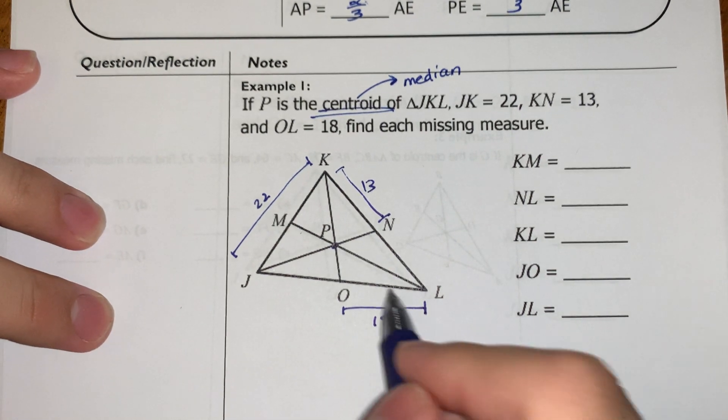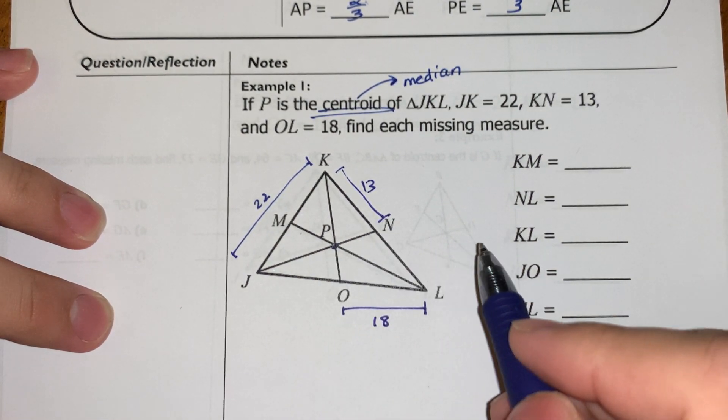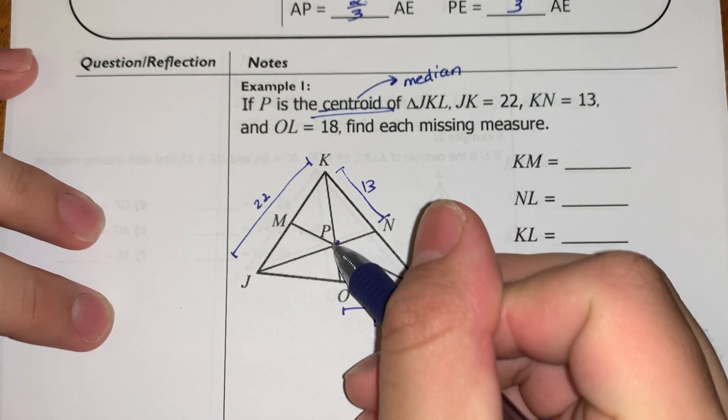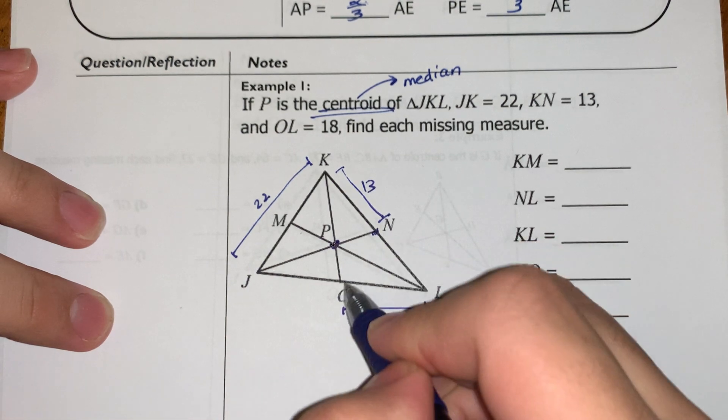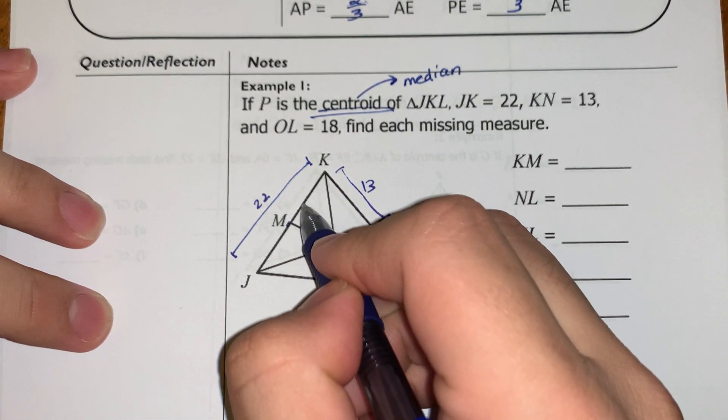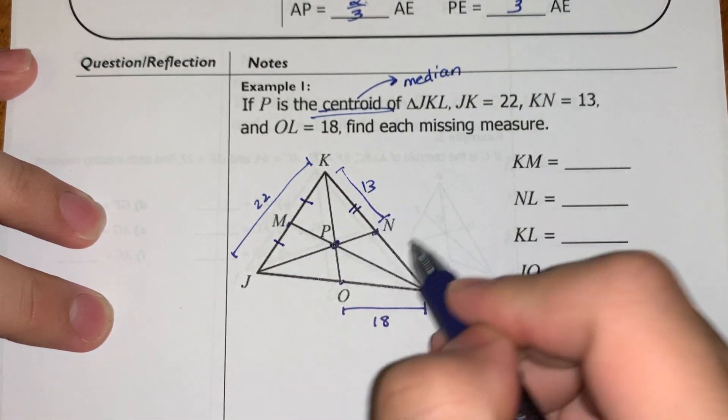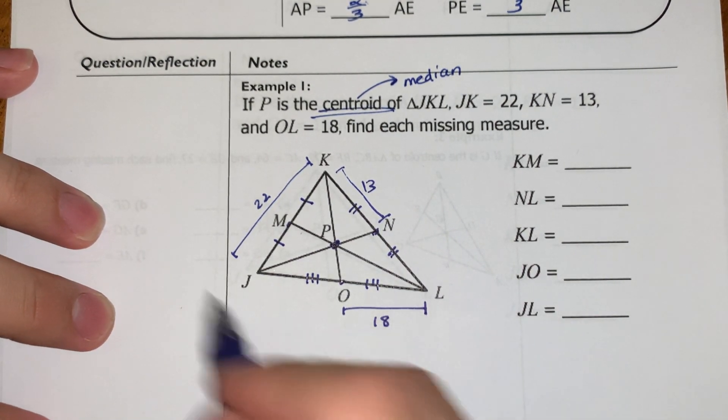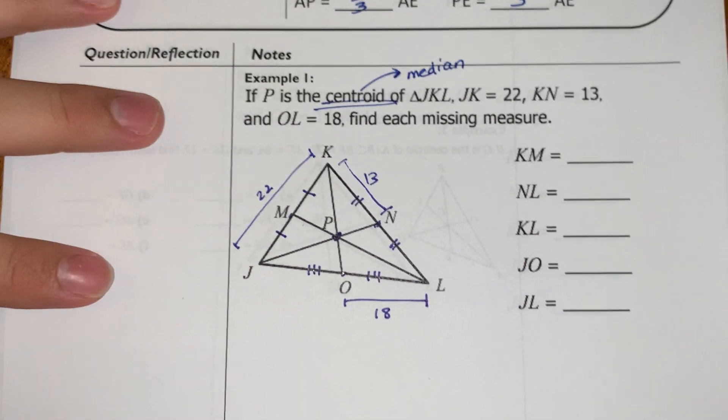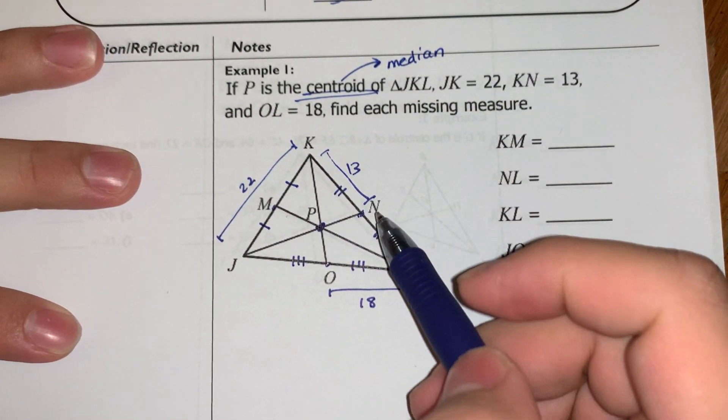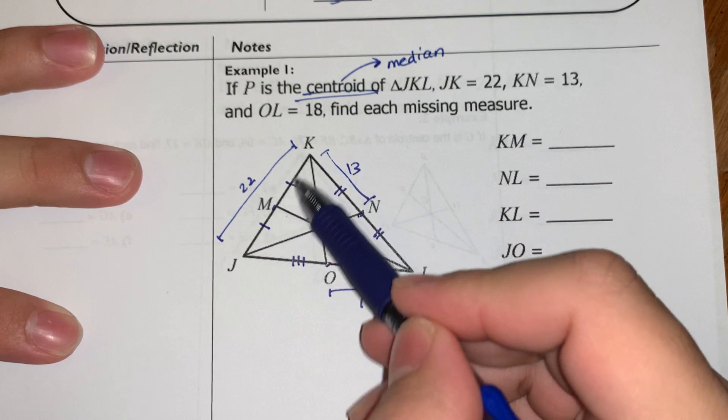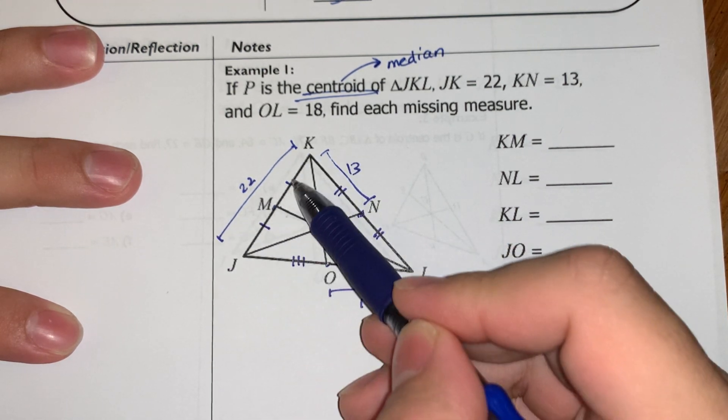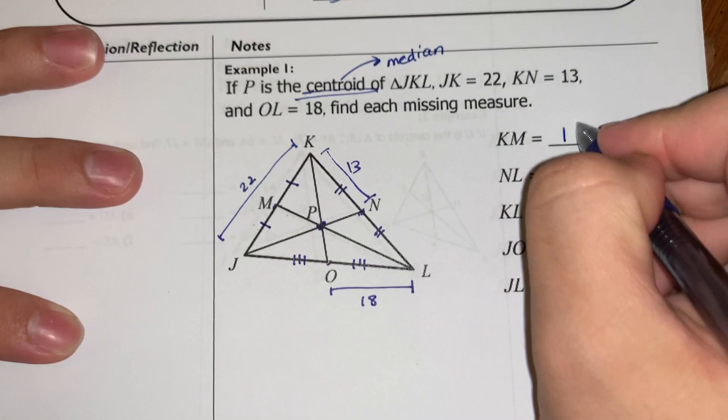So this one isn't really focused so much on the centroid. They told you the centroid, so I know that these points are the middle. So I should know that this is the same as that. This is the same as that, and this is the same as that. But we're just going to get acquainted with the idea of median. So KM, that's this distance right here from K to here. Well, I know if the whole thing is 22, then that can be split up over here as 11 and 11. So KM is 11.